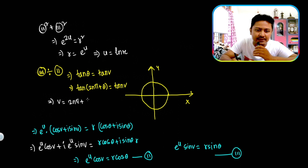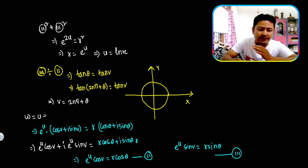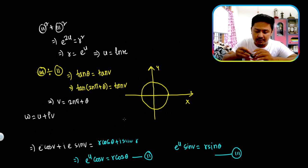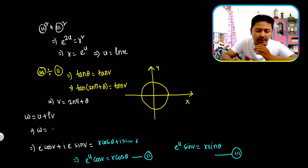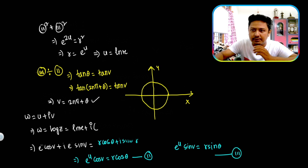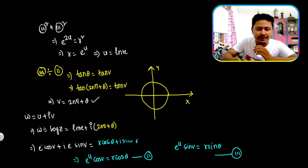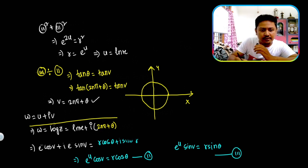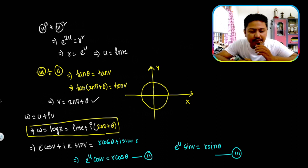So v equals 2nπ plus theta. Now we can define w equals u plus iota·v, which means log z equals ln R plus iota times (2nπ plus theta). In this way you can define the logarithmic function.